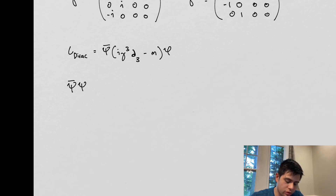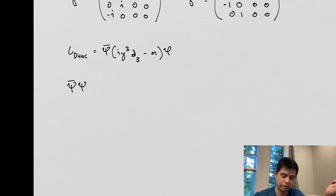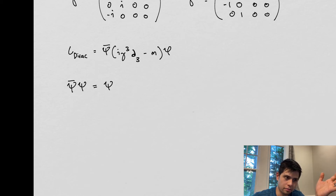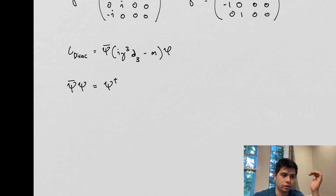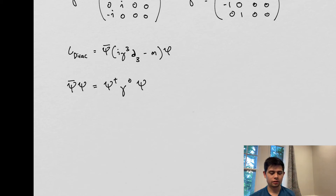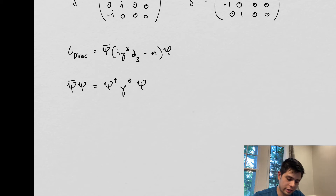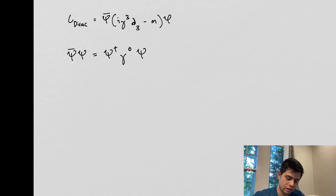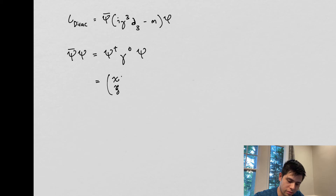We can consider what the inner product is between a spinor and its own complex conjugate. The book defines this as phi-dagger. If we remember back from chapter three, we can write a Dirac spinor as a mix between two Weyl spinors. This is taking the adjoint — and then we apply gamma zero.